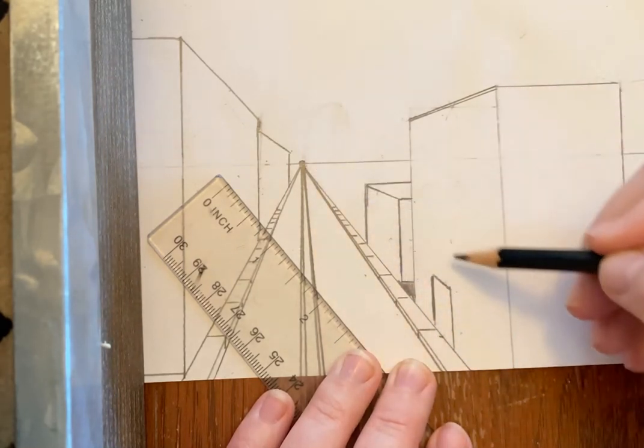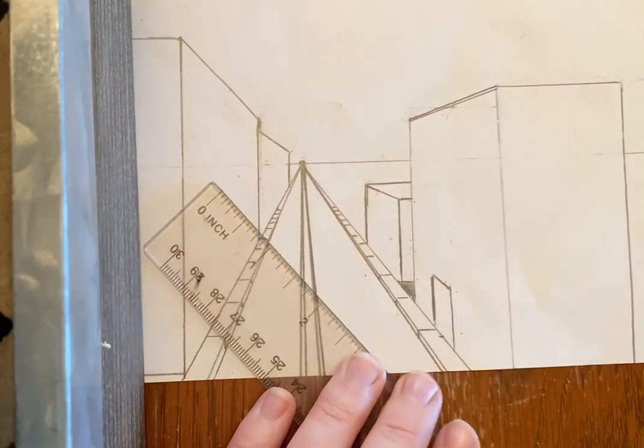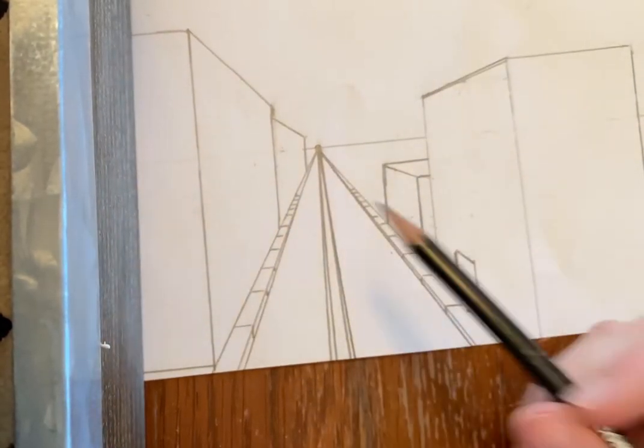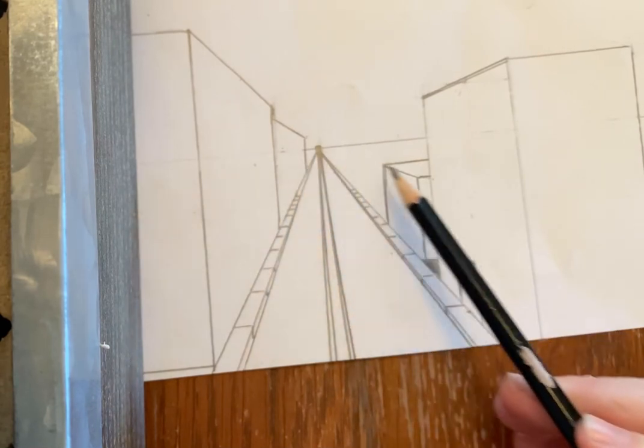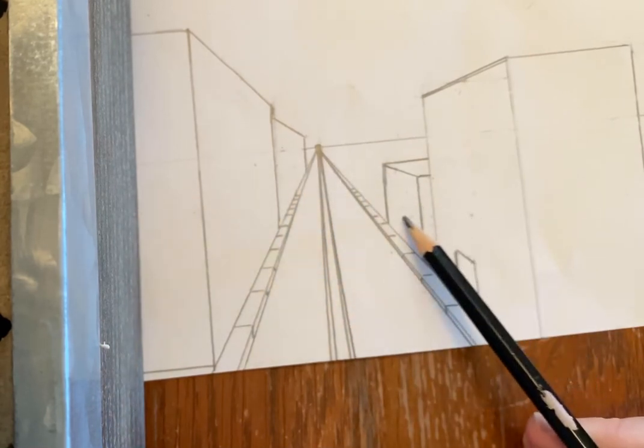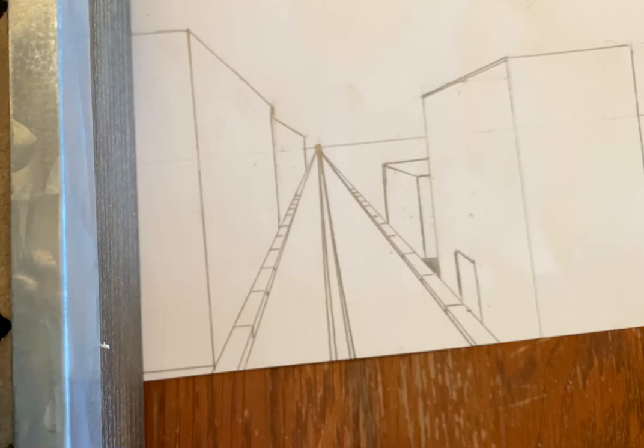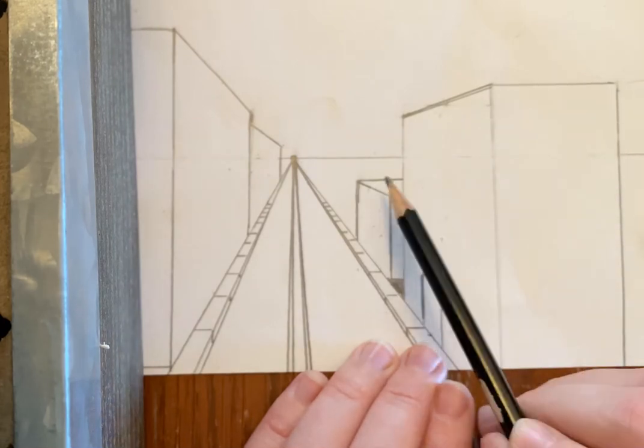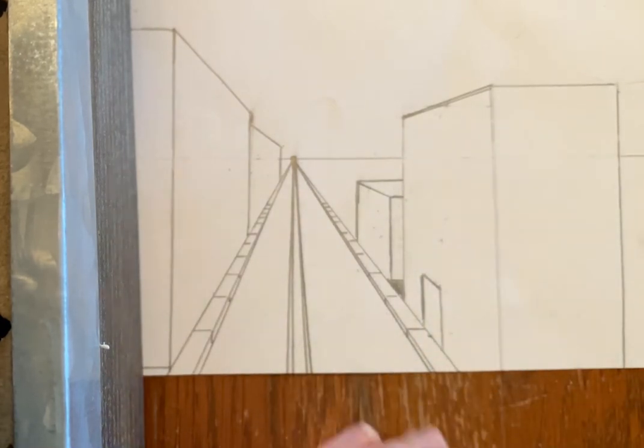If that's confusing, another tip to remember is anything that is on the front of your building is going to be a vertical or vanishing line. The only time you're gonna have horizontal lines is when you're on the side or like the roof of your building.